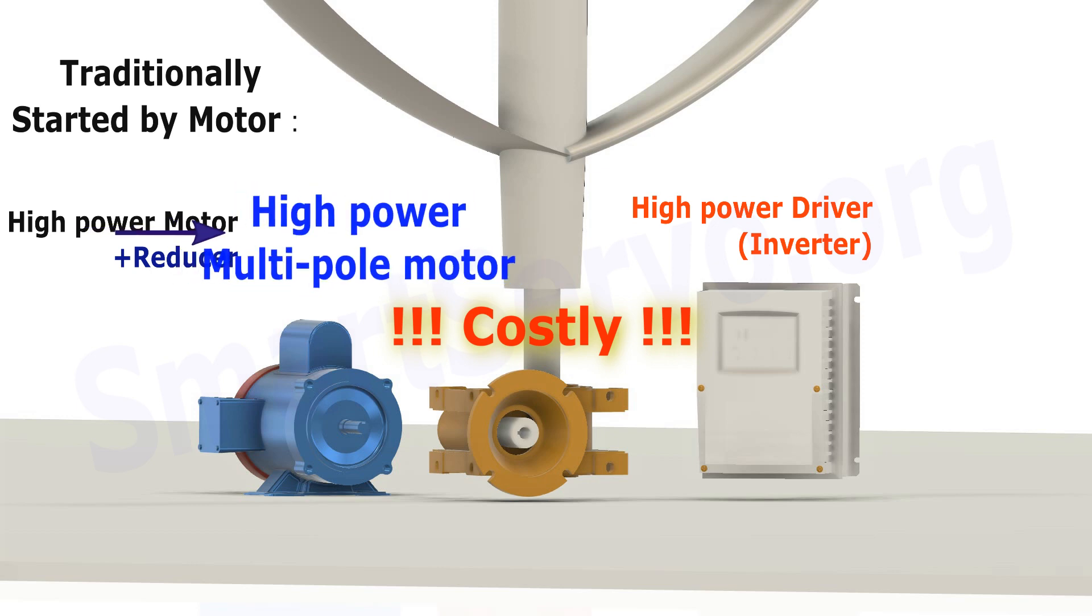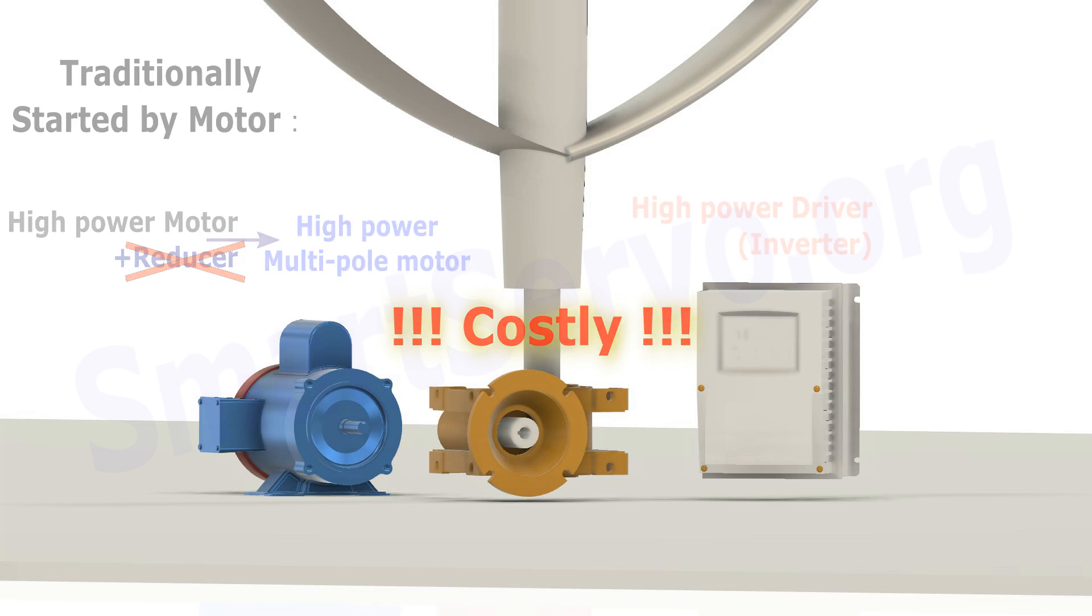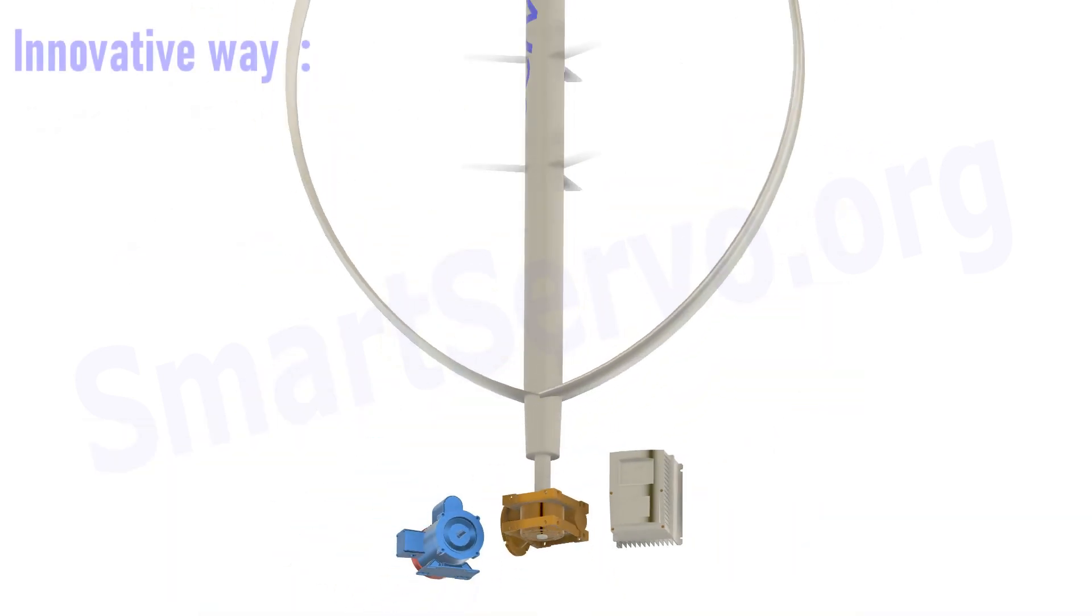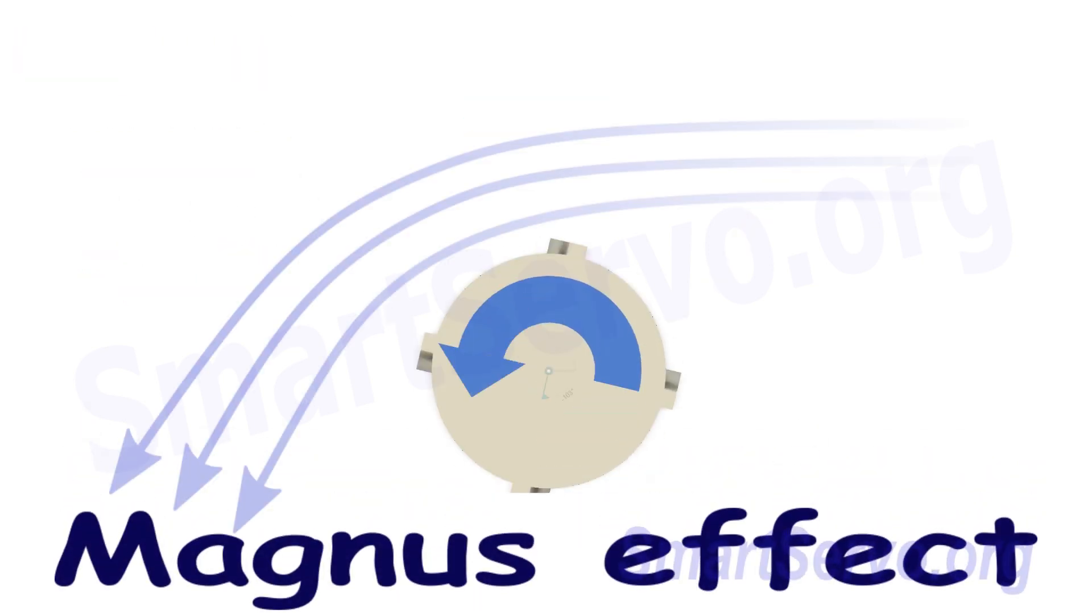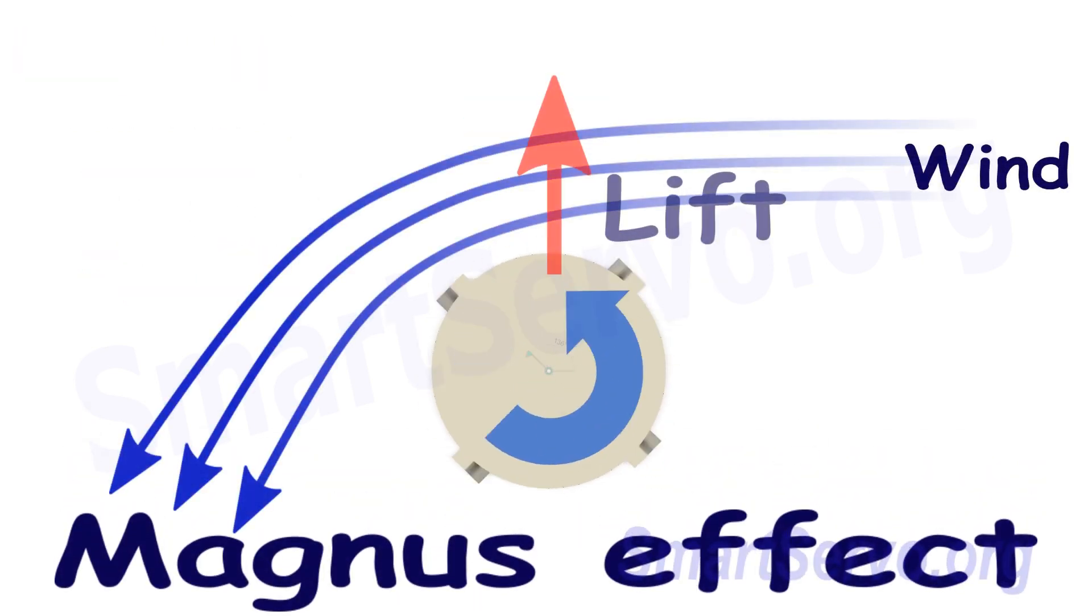If you directly drive a motor with a large number of poles to abandon the reducer, the cost is still very high. This video shows a completely new approach, using the Magnus effect to start a lift-type vertical axis wind turbine.